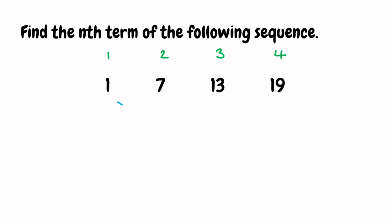We want to go term to term and see what's happening. From 1 to 7, we're adding 6. From 7 to 13, we're adding 6. And from 13 to 19, we're also adding 6. So we've got that common difference — it's a linear sequence. That difference is what goes in front of our n, and because we're adding it each time, we're going to have 6n.